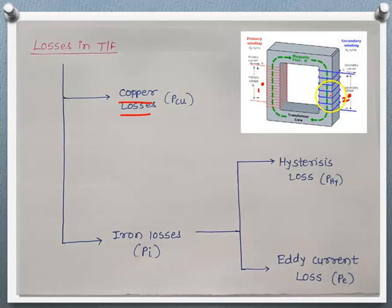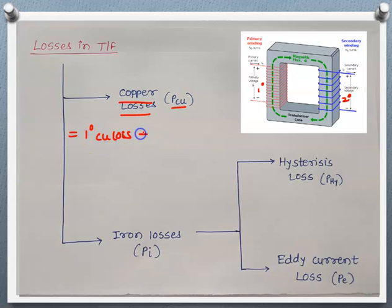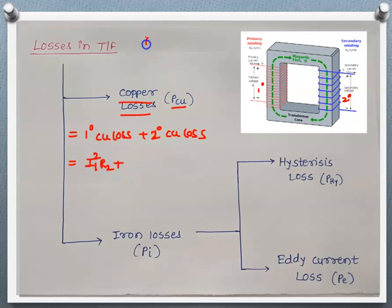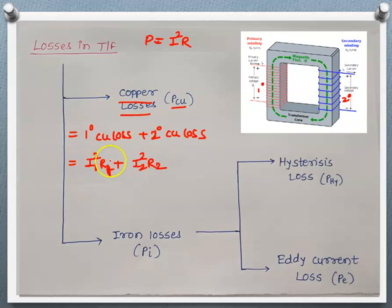We have the primary copper loss and the secondary copper loss. The summation of these two is called the total copper loss in the transformer, denoted by P_CU. Copper loss equals primary copper loss plus secondary copper loss, which is I1² × R1 + I2² × R2. This is the total power loss due to the two winding resistances.